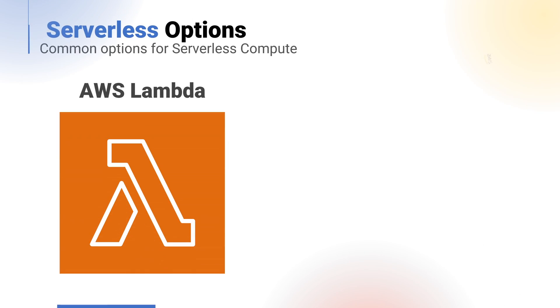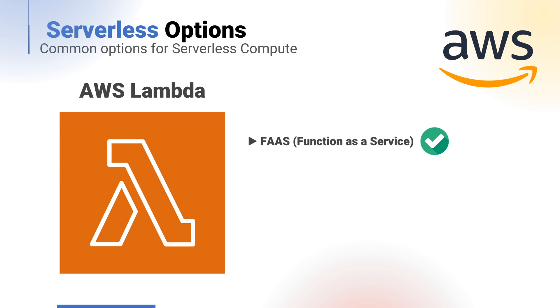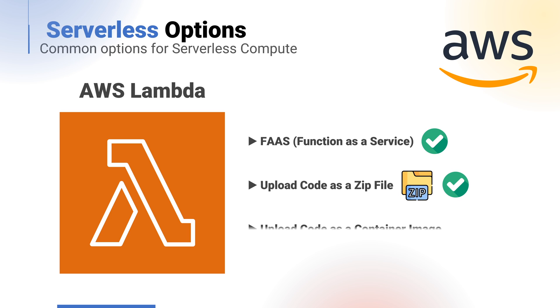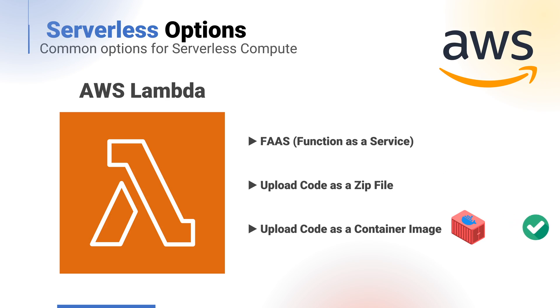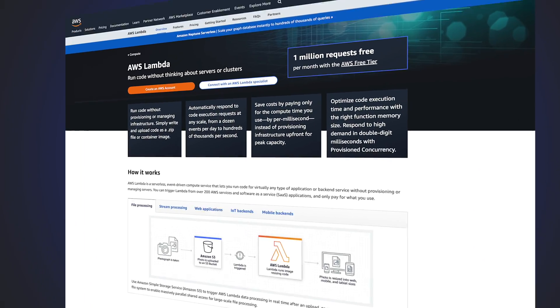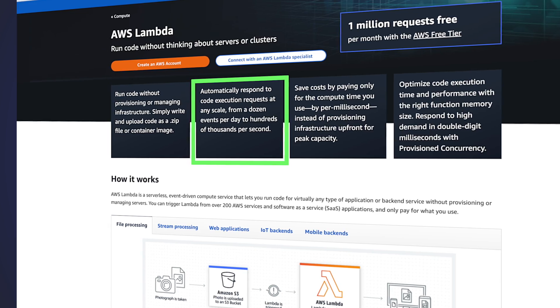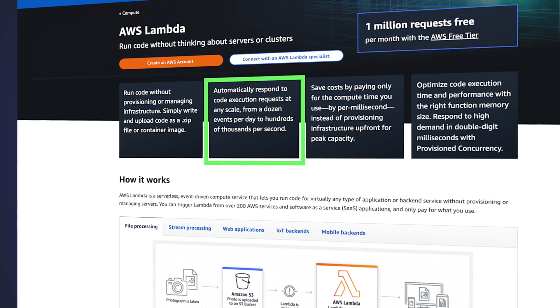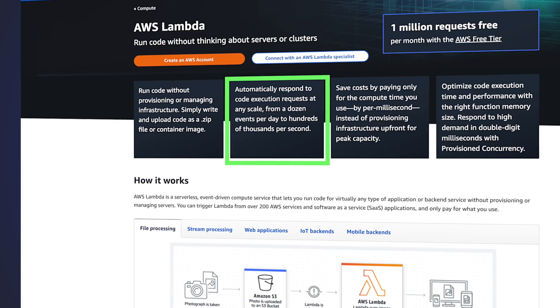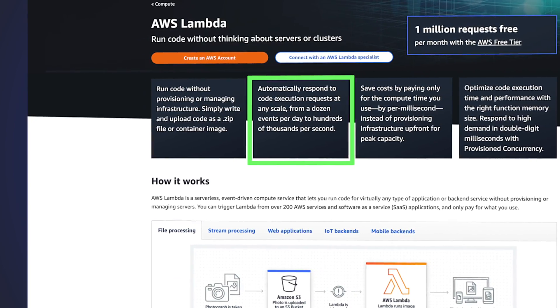To understand what serverless is, let's take a look at one of the more common serverless providers: AWS Lambda. Lambda falls into the category of FaaS — function as a service. With AWS Lambda, you can simply upload your code as a zip file or a container image. If we bring up the AWS Lambda page, this bit here is important: automatically respond to code execution requests at any scale, from a dozen events per day to hundreds of thousands per second.